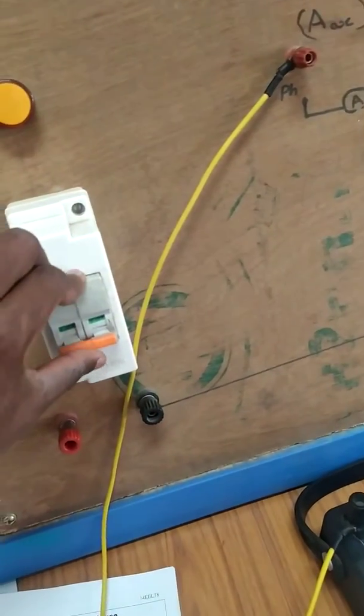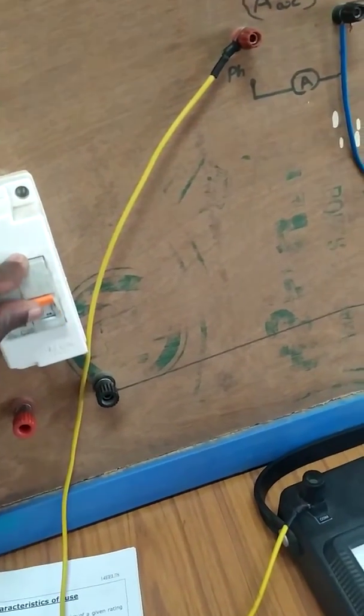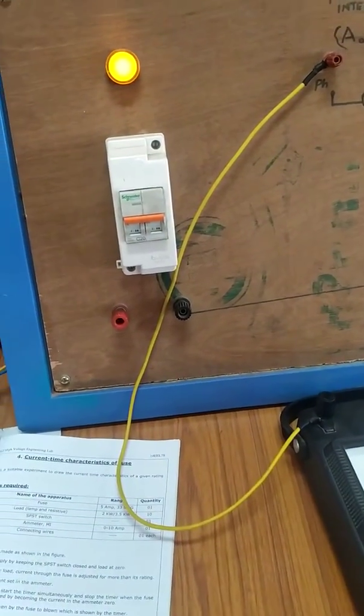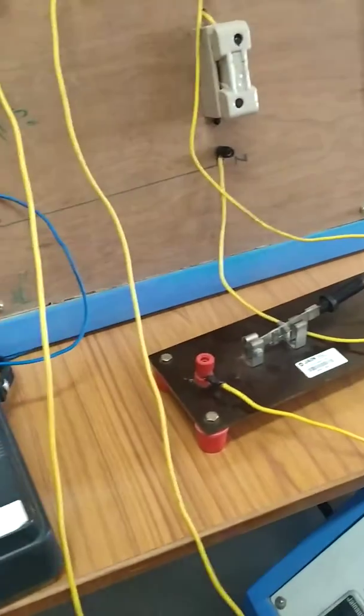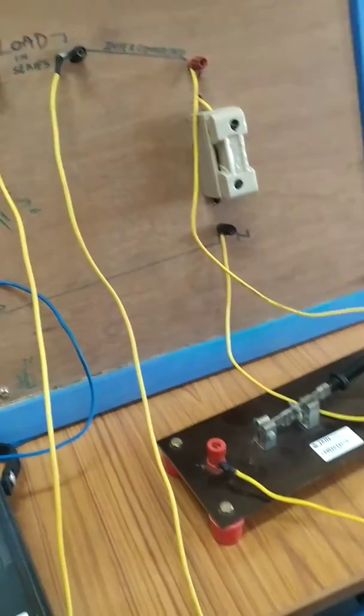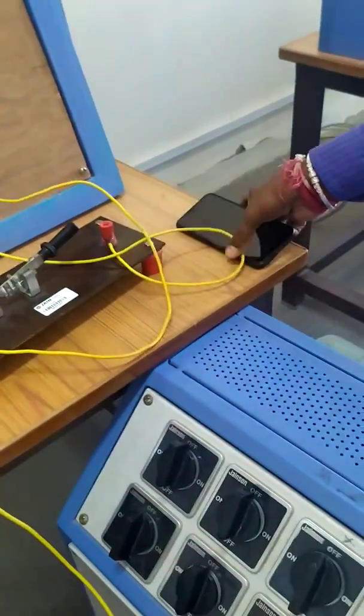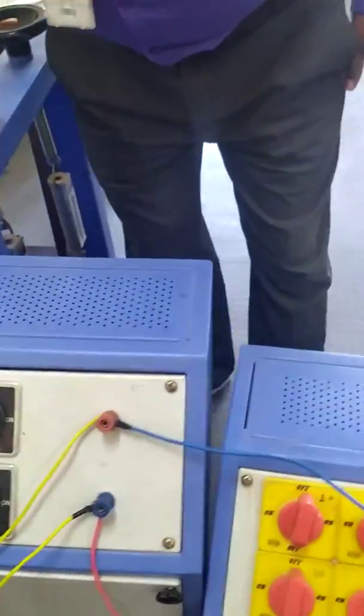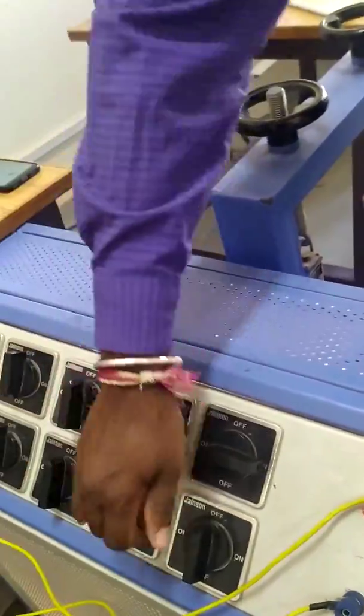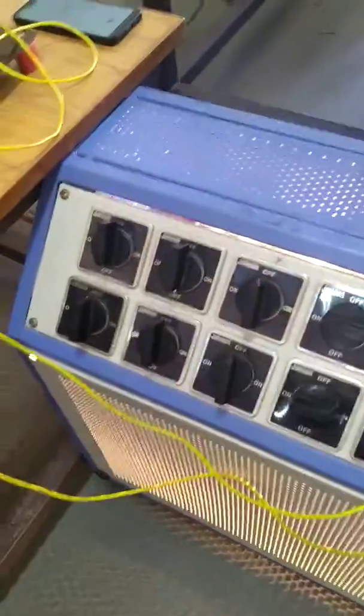First you have to switch on the MCB. Then SPST switch which is closed. The rated current is 5 amps. Above 5 amps we have to apply the load, above 5 amps.